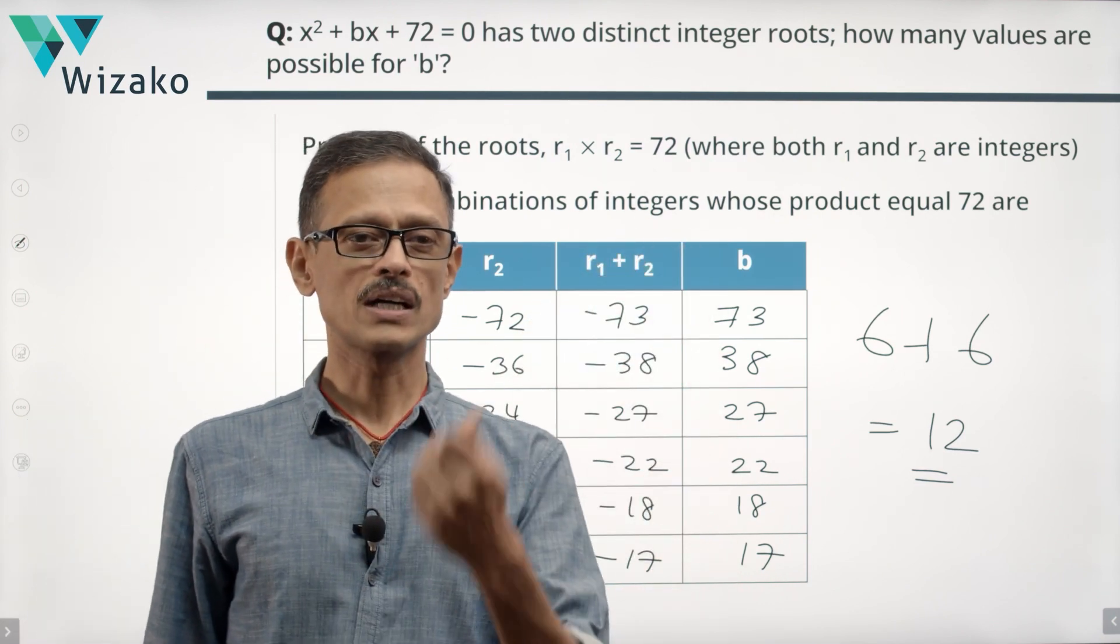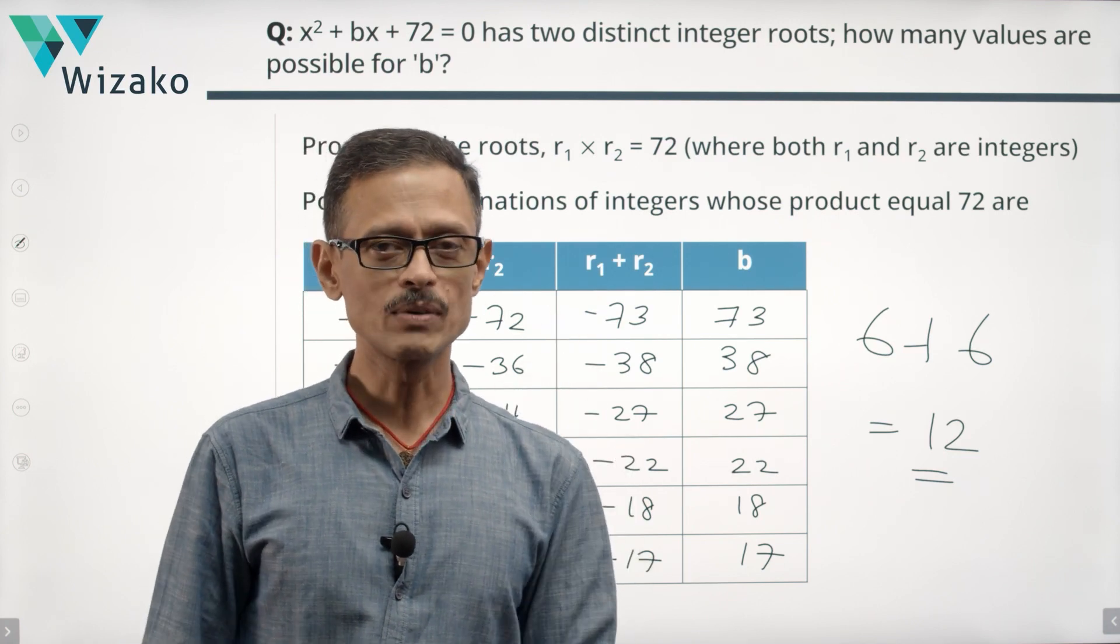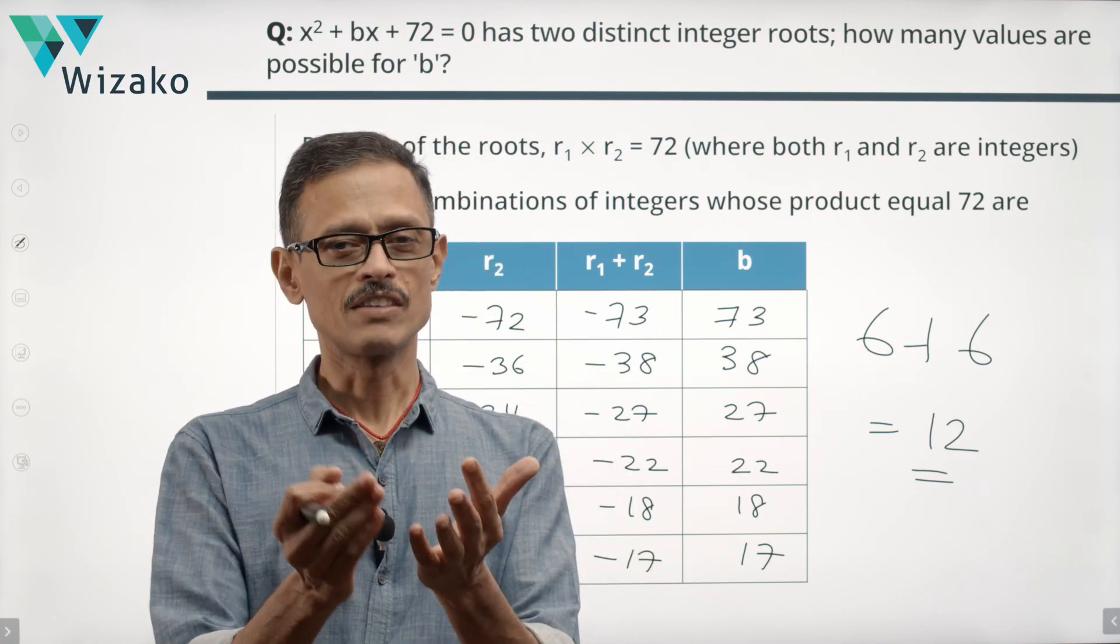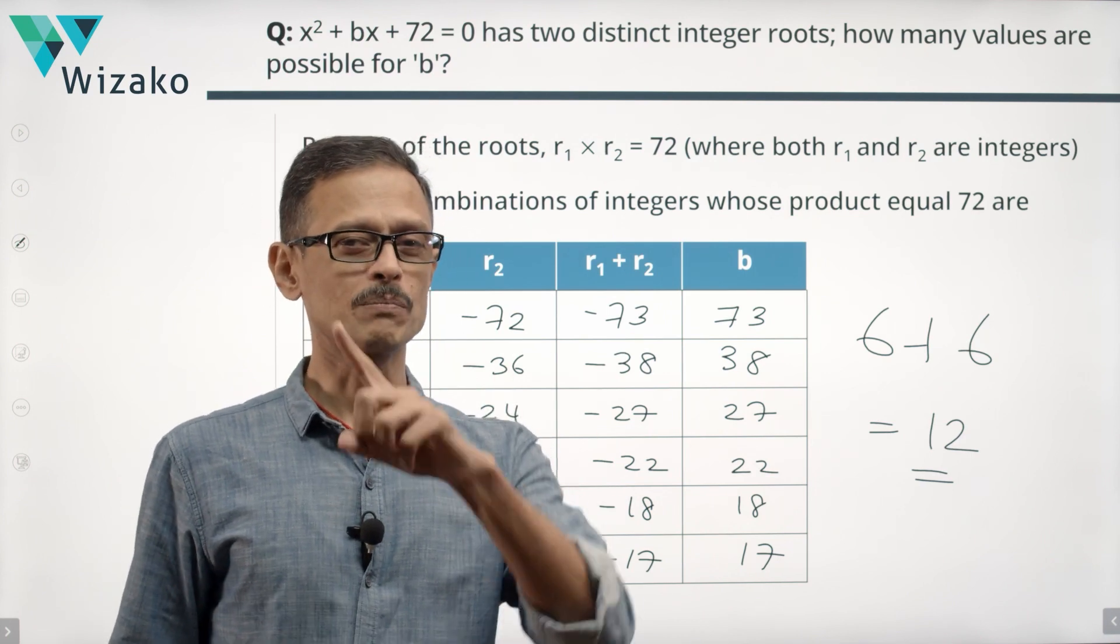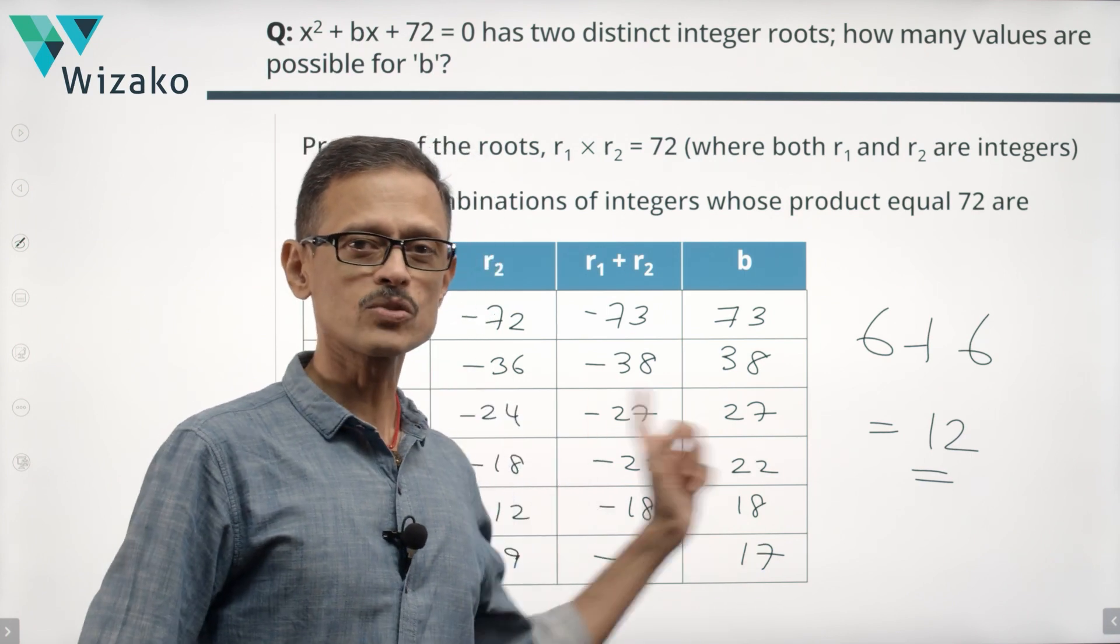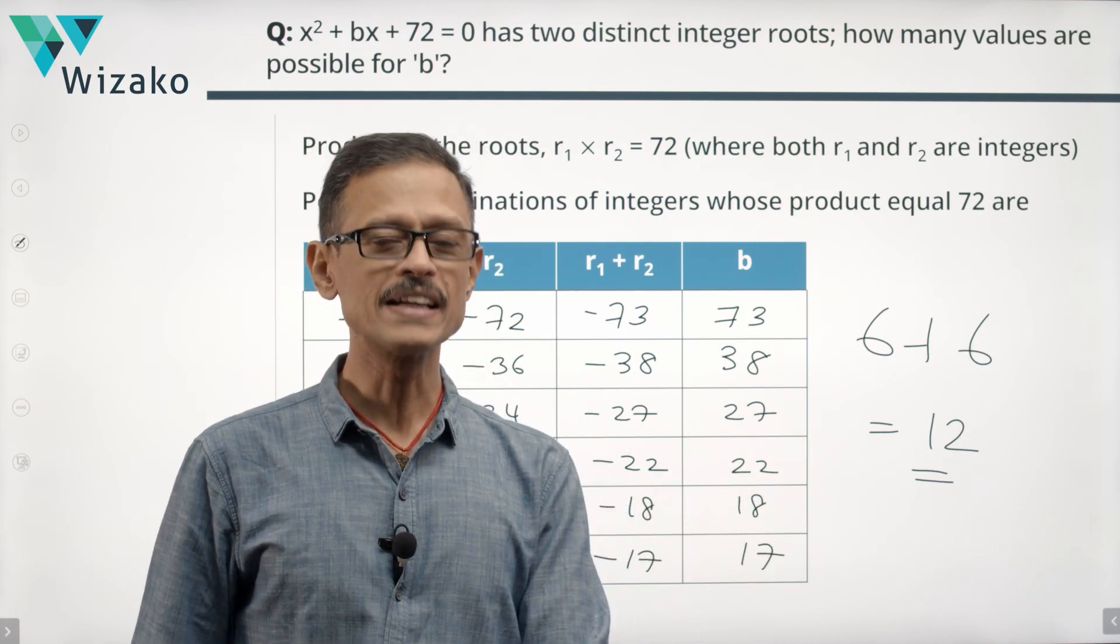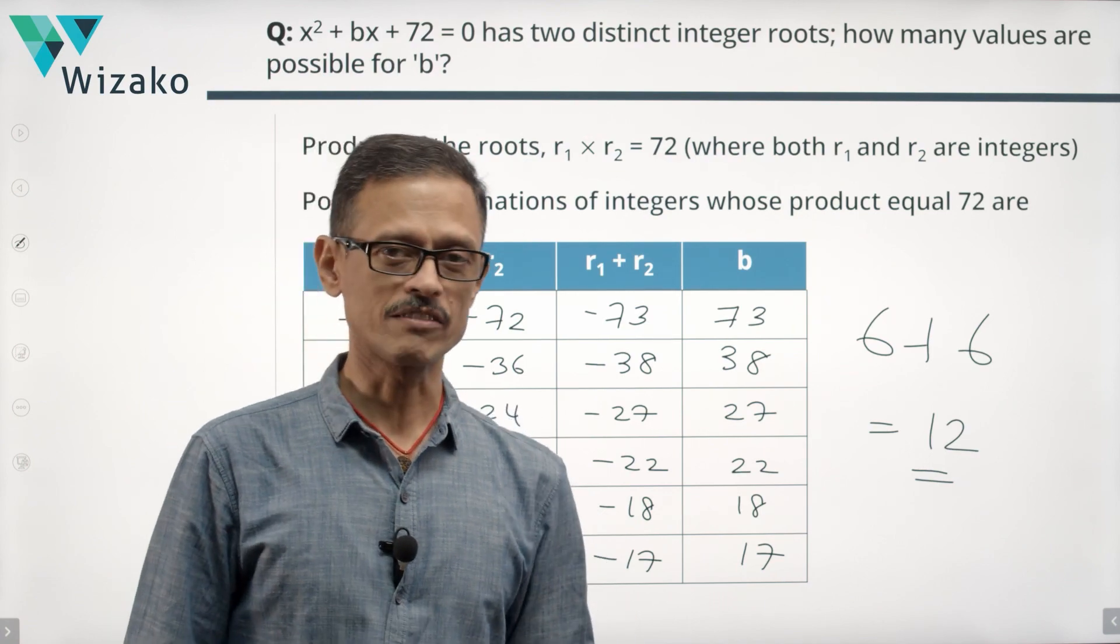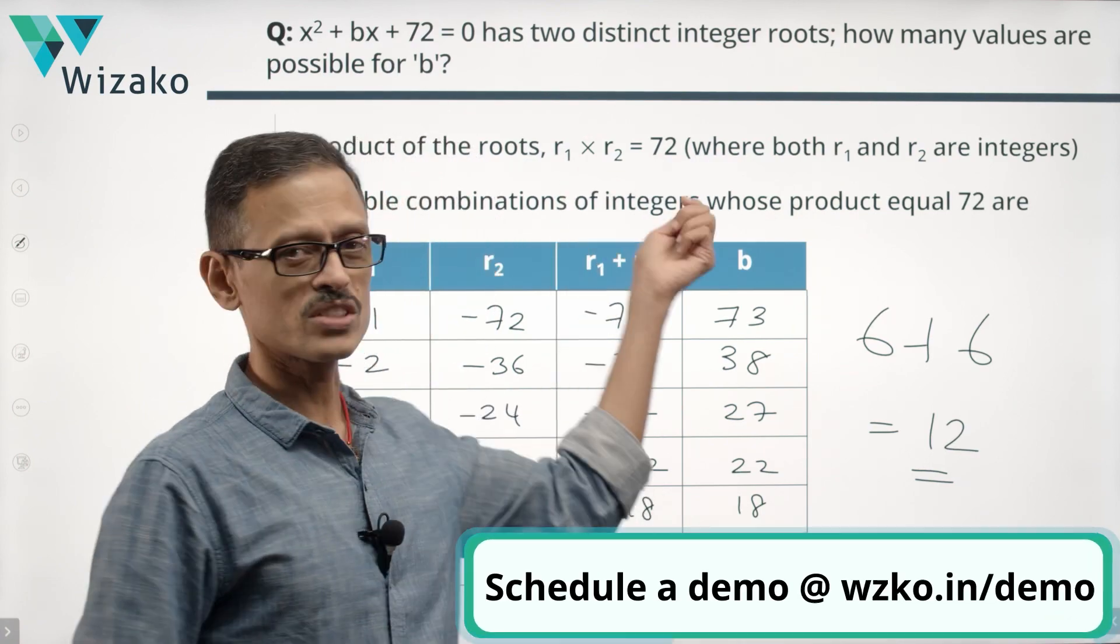If R1 times R2 is equal to 72, it could happen when both are positive or when both are negative. Both are positive or both are negative. The product will be the same value, but the sum is going to be positive in one case. Sum is going to be negative in another case. And therefore corresponding the values of B will be negative and positive respectively. So we need to account for both of these things.